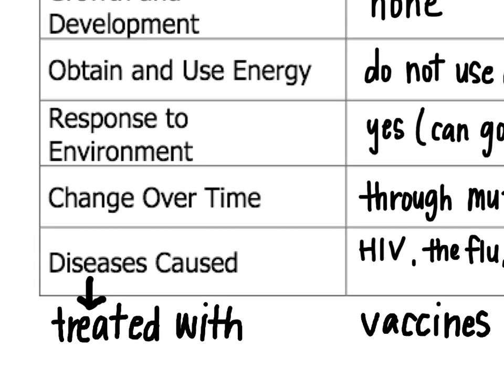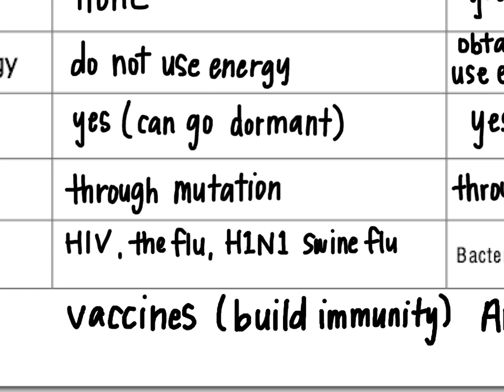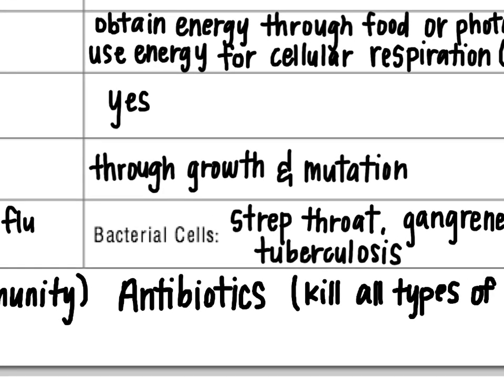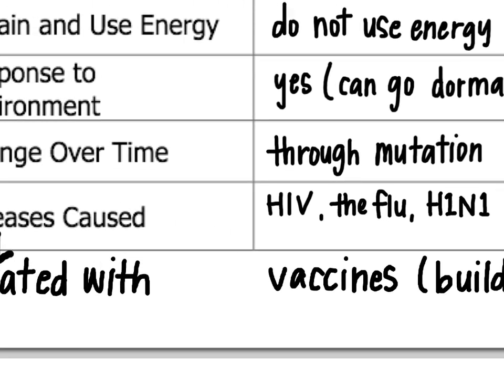Change over time: the only changes that will happen in viruses happen through mutations — mistakes that are made when the virus's RNA or DNA is being transcribed and translated. You might get some variation through mutation, but it's very, very slow. Cells are going to change both through growth and mutation, so there's a lot more change happening. The individual cell can actually change in its lifetime, whereas with a virus, all that can really change is the offspring of that virus.